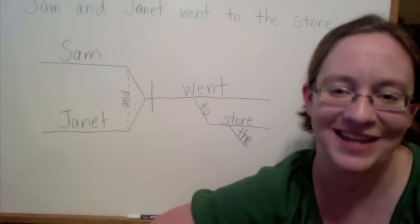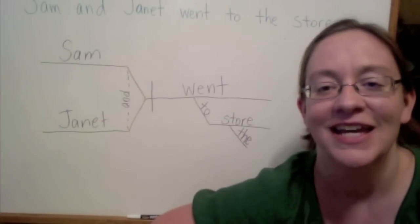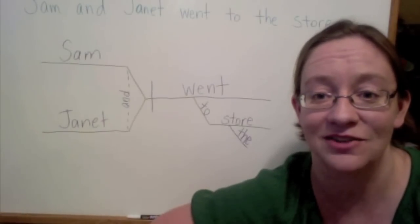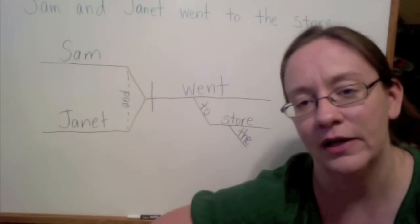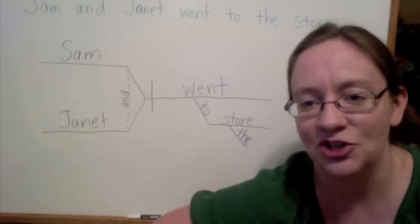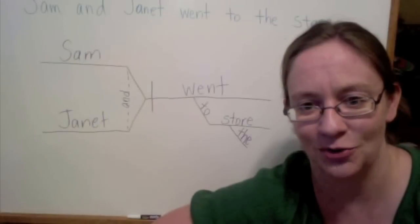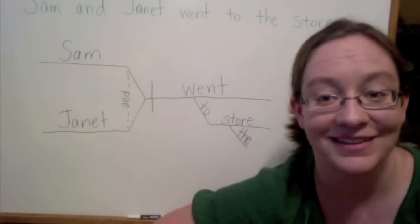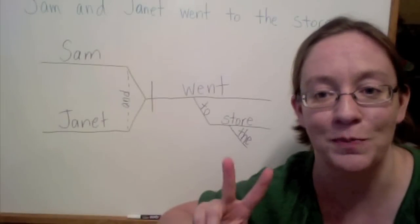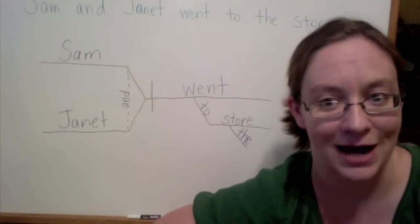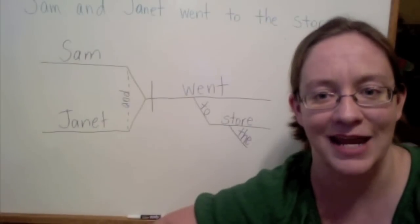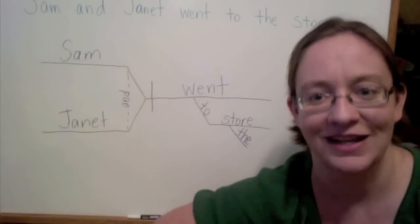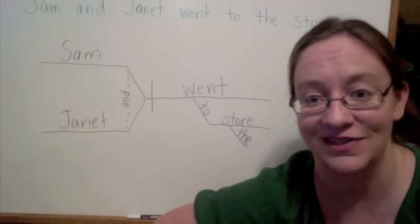Let's look at an example of a sentence with a compound subject. In the sentence, 'Sam and Janet went to the store,' first we need to ask ourselves who or what is performing the action of the sentence. The action of this sentence is 'went to the store.' So, who or what went to the store? Sam and Janet. That means we have two people — and people are nouns — performing the same action, or the same predicate. That makes Sam and Janet the compound subject of the sentence.